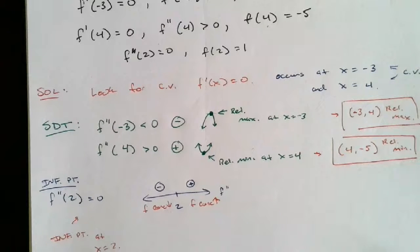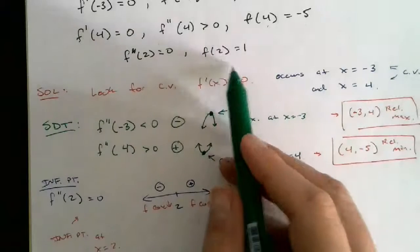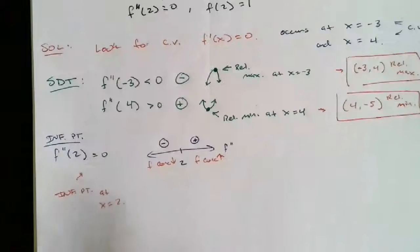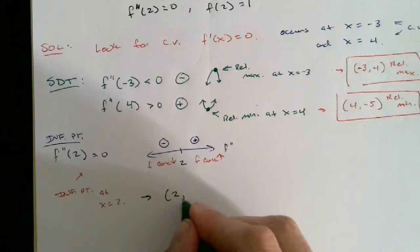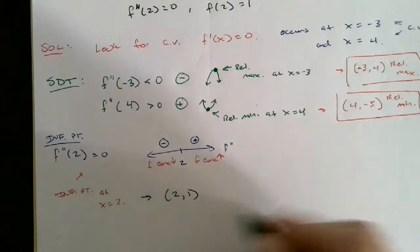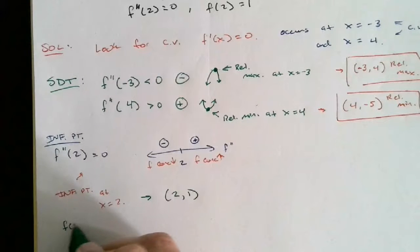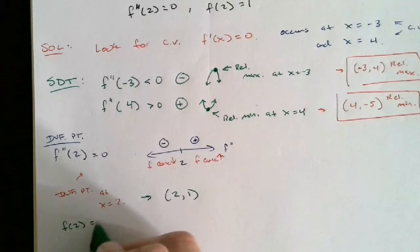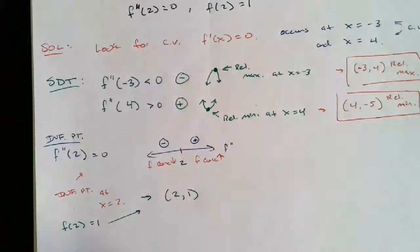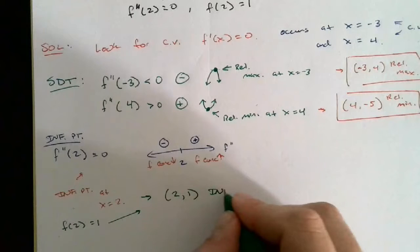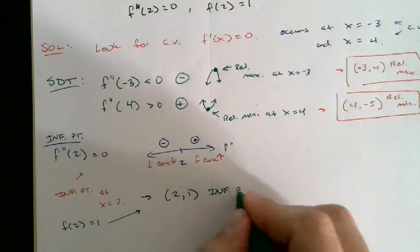What's the y-value at the inflection point? We know that f(2)=1, so the inflection point is at the point (2, 1), and we know that'll be the inflection point on our graph.